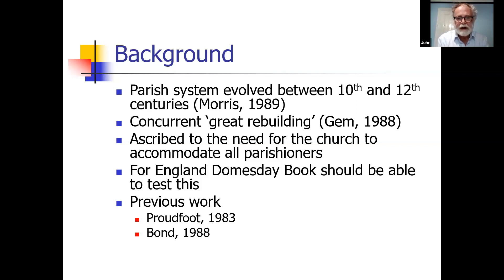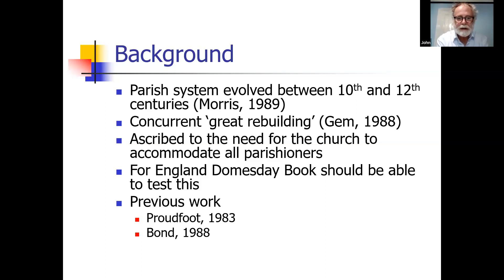Can this be tested? What you need is something that tells you about the population of a parish. It so happens that England is unique in having the Domesday Book, which provides this information at the level of detail required. So what I'm going to talk about is how does the population recorded in the Domesday Book relate to the size of Norman parish churches. I use the term Norman — that's the historical period roughly 1060 to 1200 — and it also relates to a particular form of architecture.